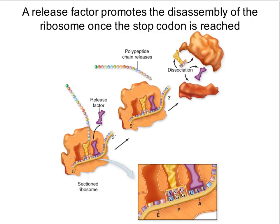This process continues until the ribosome reaches the three nucleotide sequence that codes for a stop codon. There is no tRNA complementary to that stop codon; instead, there is a release factor that is complementary to it. The release factor reads the stop codon and signals the dissociation of the ribosome — the large subunit dissociates from the small subunit and translation stops.